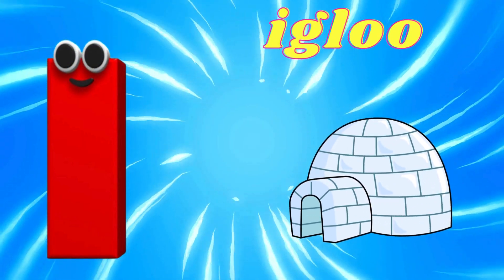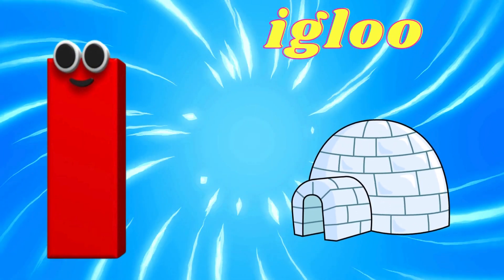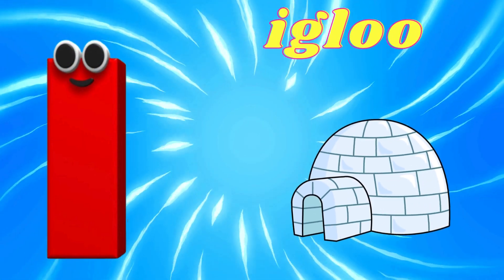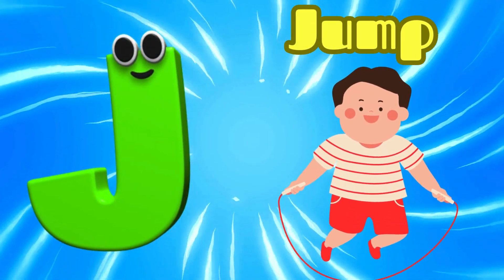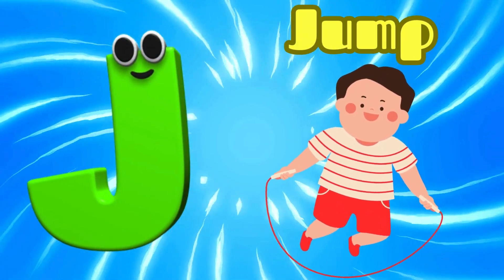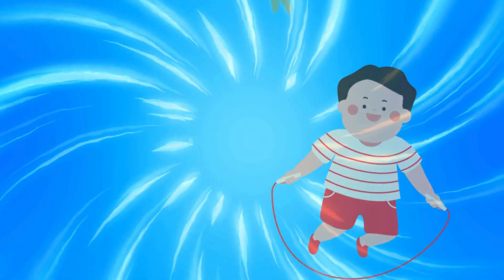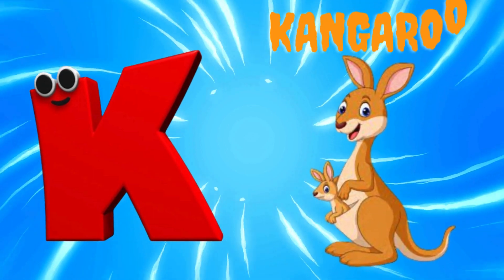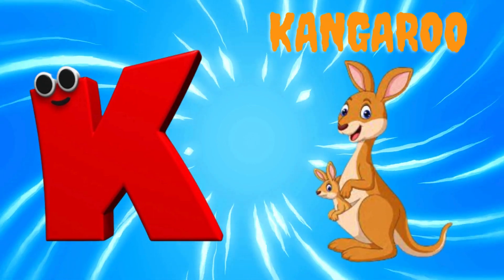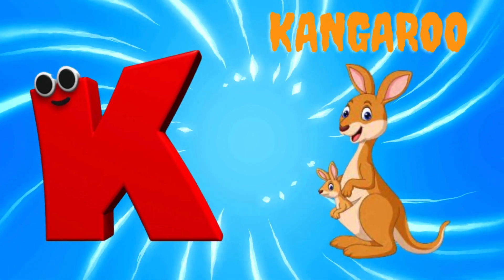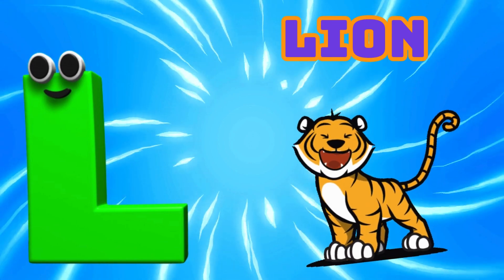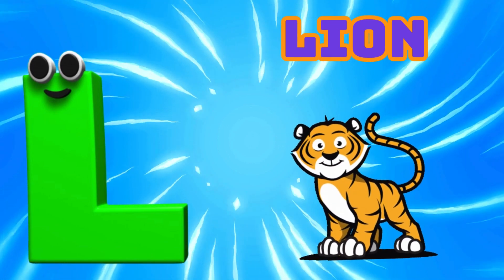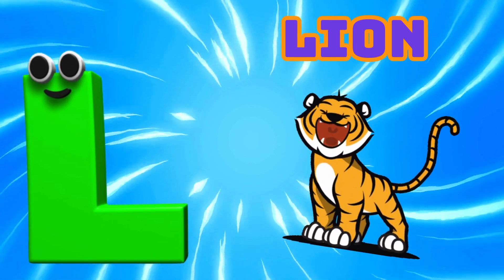I is for Igloo, I-I-Igloo. J is for Jump, J-J-Jump. K is for Kangaroo, K-K-Kangaroo. L is for Lion, L-L-Lion.